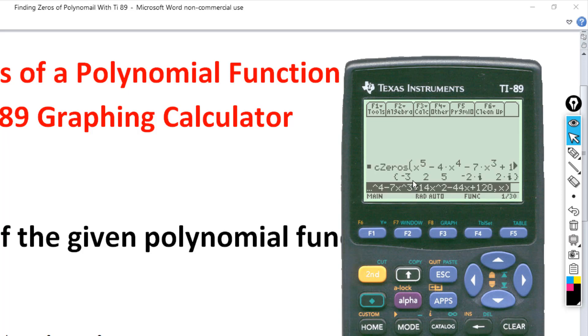Okay, there you have it. So, the zeros here are negative 3, 2, 5, minus 2i, and plus 2i. That's 5 zeros. So, this one actually has three real zeros, negative 3, 2, and 5, and two imaginary zeros, negative 2i and plus 2i. So, that's how easy it is to do it on the TI-89 calculator.